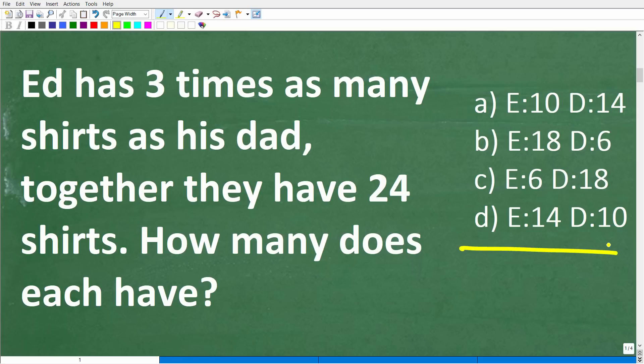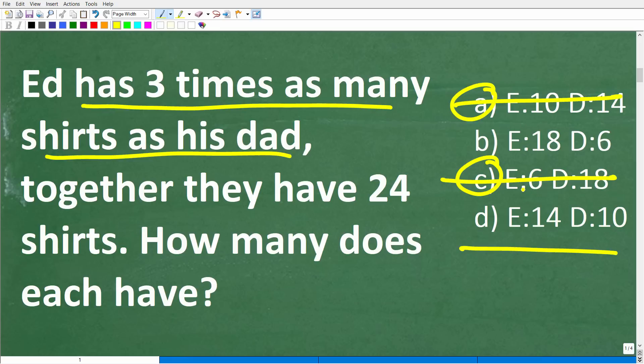Now, this is a great problem, too, because it is a multiple choice question. And for those of you that still have to take a test, you can see right here, there are two obvious wrong answers. Now, why is that? Well, Ed has three times as many shirts as his dad. So Ed's going to have more shirts than his dad. So if we look here, like C, for example, Ed has six shirts and his dad has 18. So he clearly doesn't have more shirts than his dad. So we can eliminate that answer right there. And A, Ed has 10 and his dad has 14. So these two answers, right off the bat, we can eliminate. So you could take a guess here between these two and you have a 50-50 chance of getting the right answer.